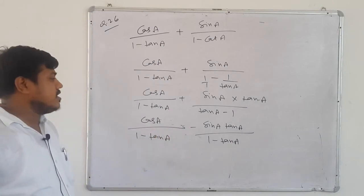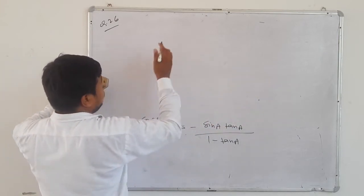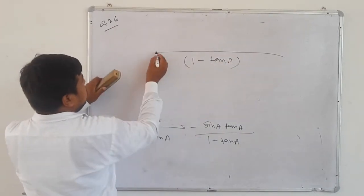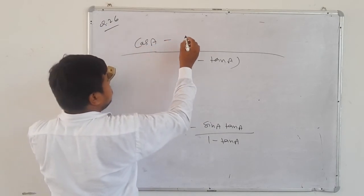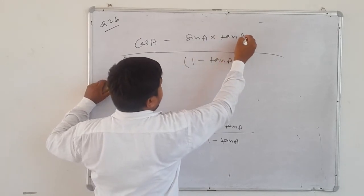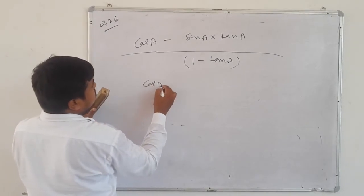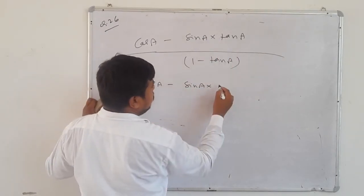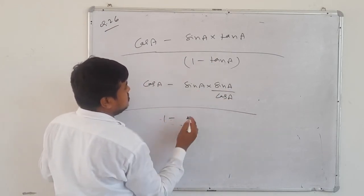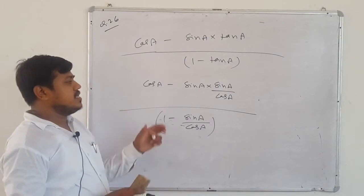Denominators are now the same — directly subtract. Numerator: cos A - sin A·tan A. Change tan A = sin A/cos A: so cos A - sin²A/cos A. Take LCM (cos A): (cos²A - sin²A)/cos A over (1 - sin A/cos A), i.e., denominator becomes (cos A - sin A)/cos A.